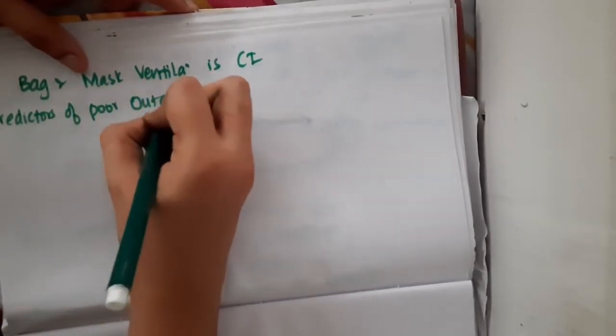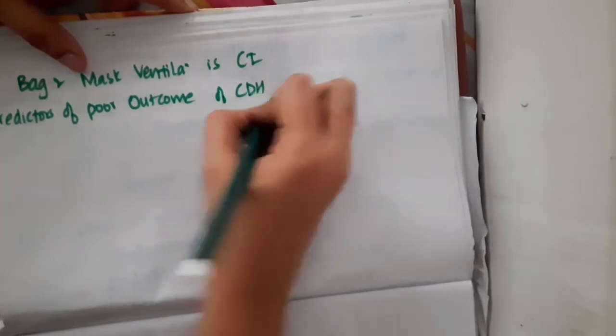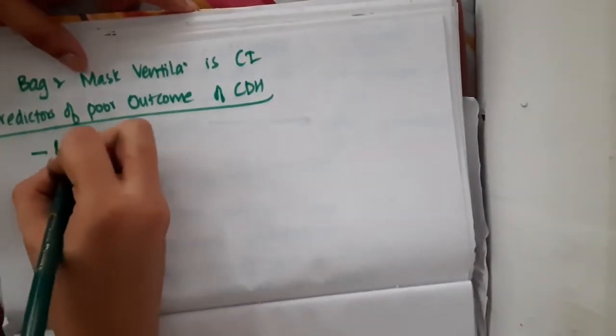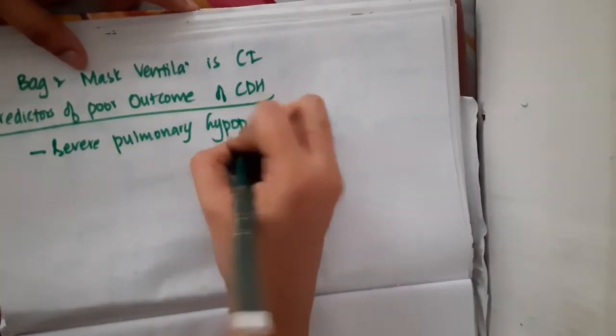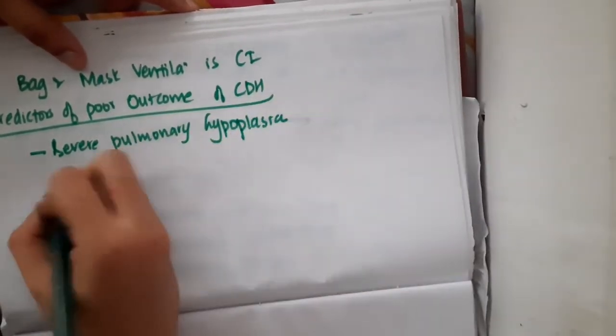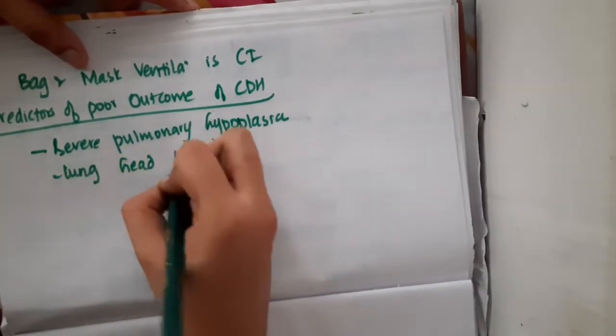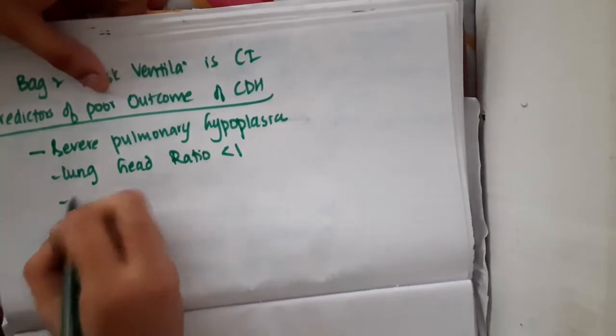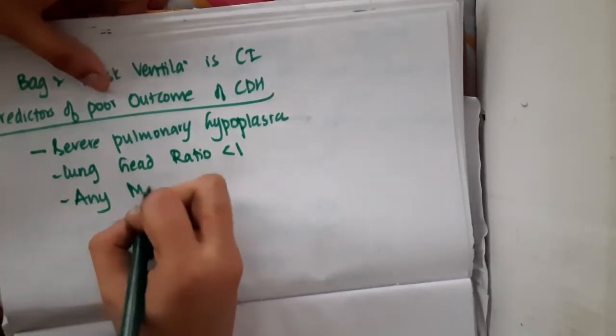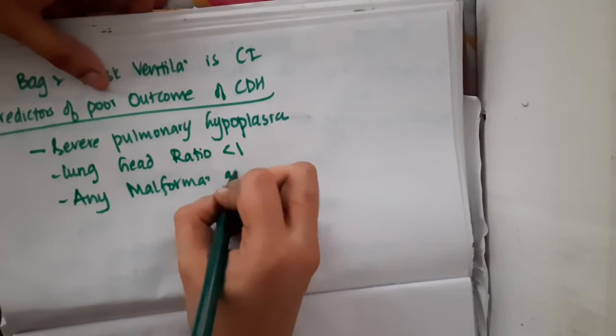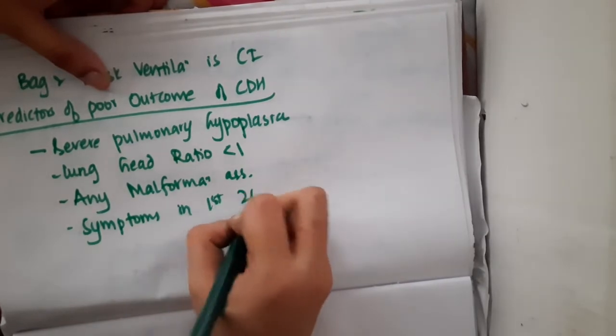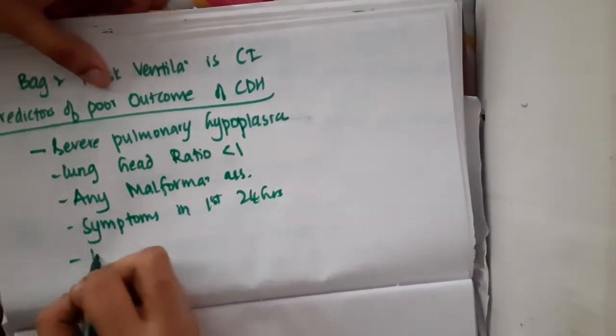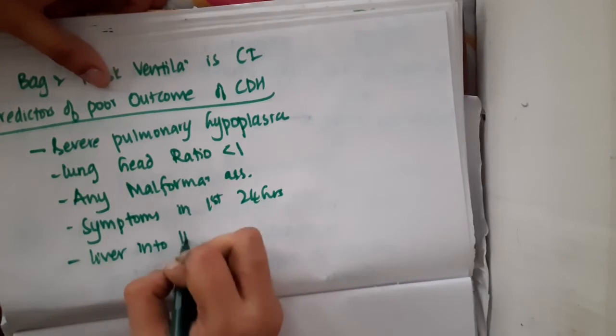Predictors of poor outcome in congenital diaphragmatic hernia include severe pulmonary hypoplasia, lung head ratio less than one, associated malformations, symptoms present in first 24 hours, or if the liver is in the thorax.